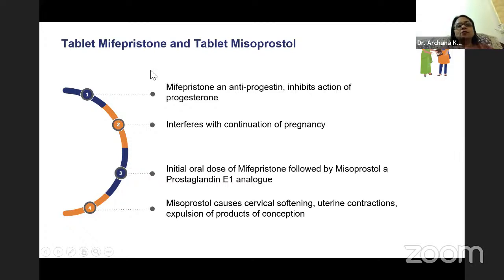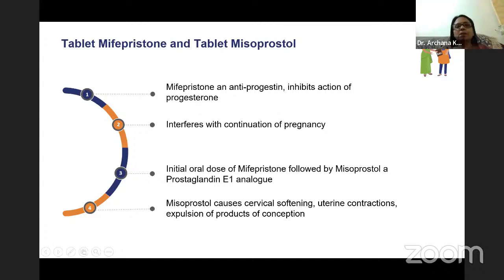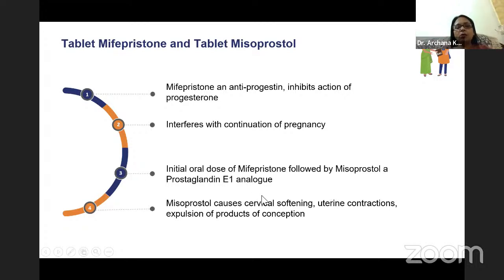Mifepristone is an antiprogestin — it inhibits the action of progesterone, thus interfering with continuation of the pregnancy. Misoprostol is a prostaglandin-E1 analog — it causes cervical softening, initiates uterine contraction, and causes expulsion of the products of conception. This is the mechanism of the mifepristone-misoprostol combination.